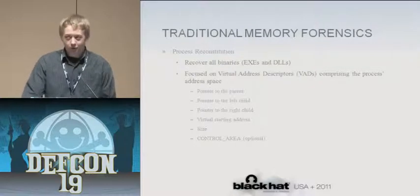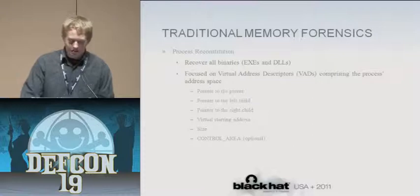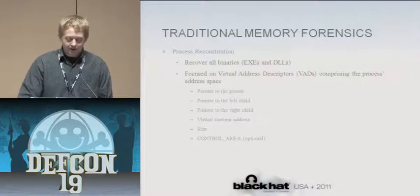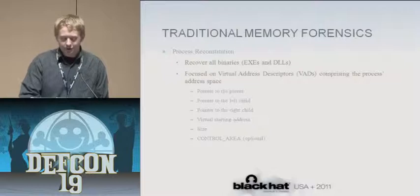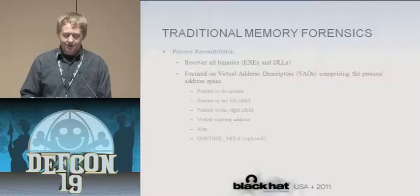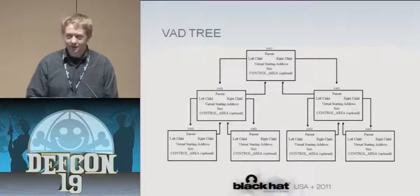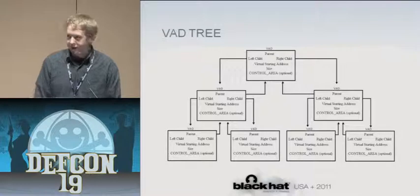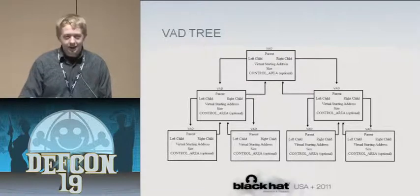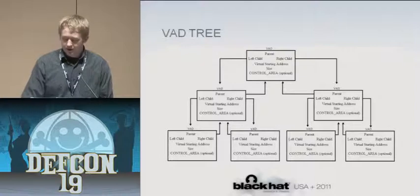Most tools rely on virtual address descriptors or VADs, which describe the process's address space in memory. They're made up of objects containing pointers to left and right children — they're usually in a tree structure. Each VAD also contains the starting address and size of the memory along with a pointer to the control area. Here's a representation of a typical VAD tree — it starts with the VAD root, and each VAD contains information about the virtual addresses of the process.